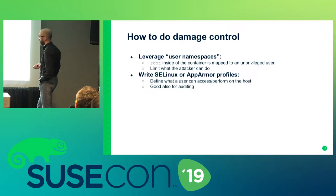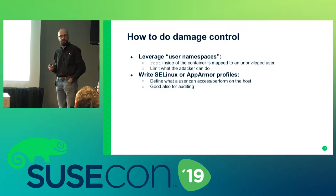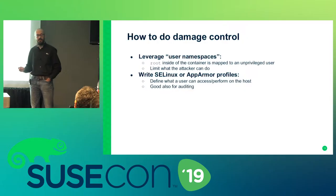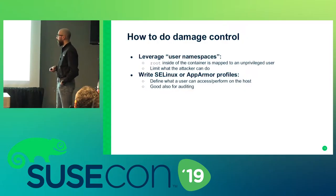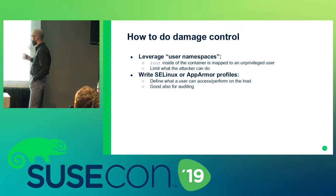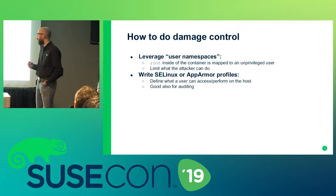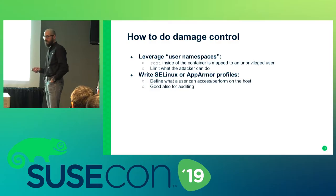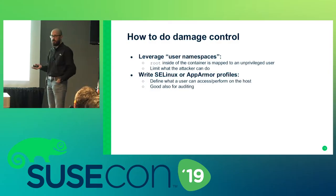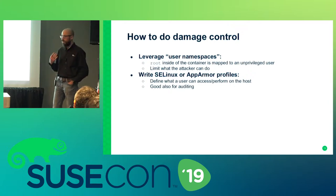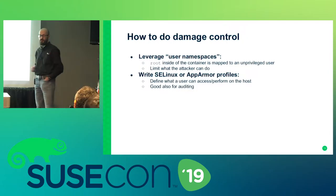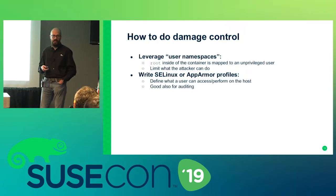When something goes wrong, you can run containers using user namespaces — mapping the root inside the container to an unprivileged user on the host, so if an attacker escapes they end up with a high UID that can't do much. You can also empower security policies like SELinux or AppArmor to limit what the user can do after escaping. For example, if your application doesn't need to write to /etc, strip that away.